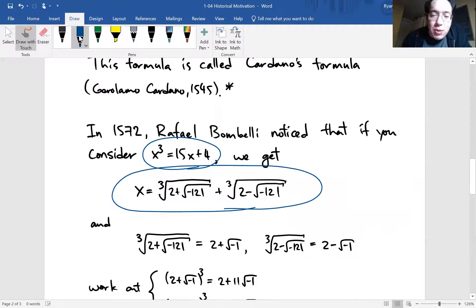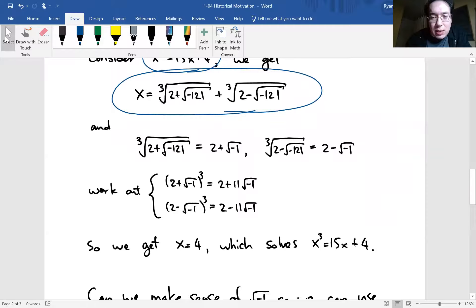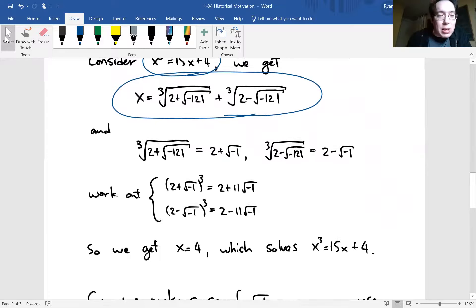So when you arrive at this formula, notice that you have like a negative under a square root. And you might at this point say, well, actually this Cardano's formula doesn't work for this case. But Bombelli looked at it a little bit further. So he actually worked out what the cube root was. And I think I'm gonna let you work out the details.